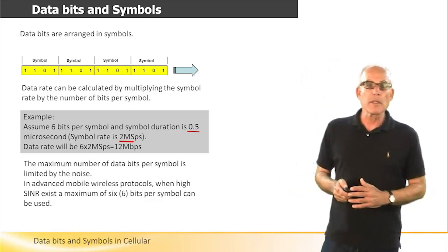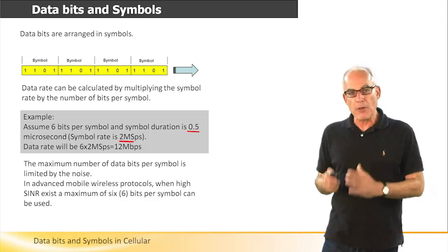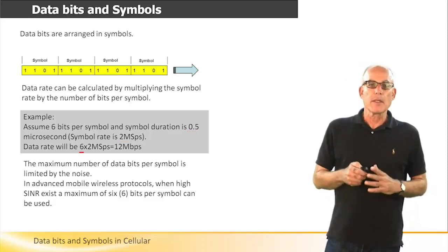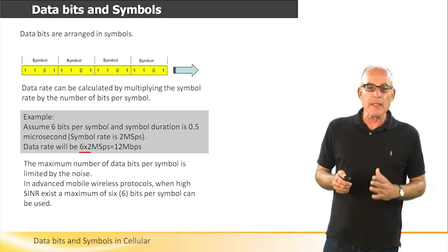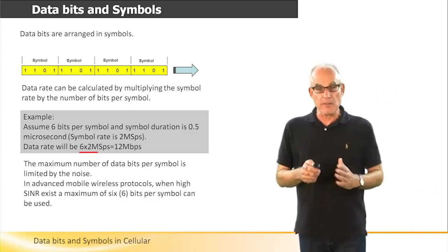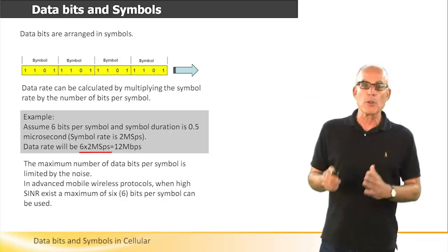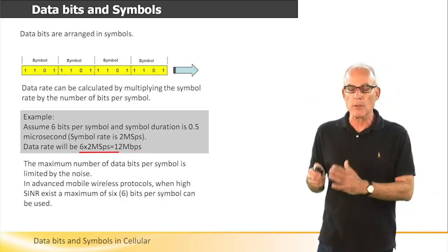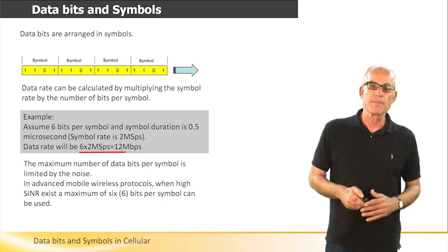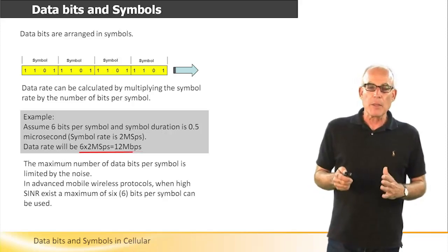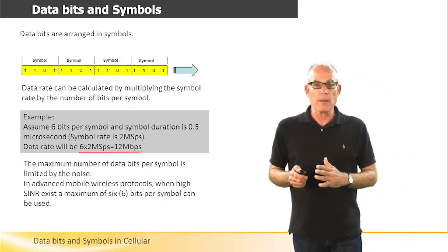Let's assume we use six bits for each symbol. In this case, the data rate, or bit rate, will be six bits multiplied by the symbol rate of two mega samples per second. This will provide 12 megabits per second.